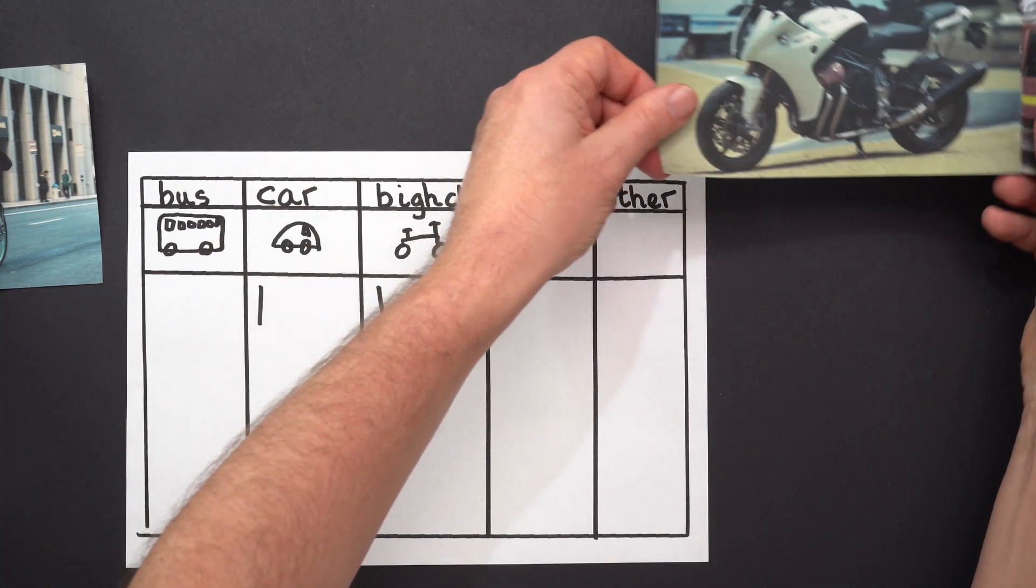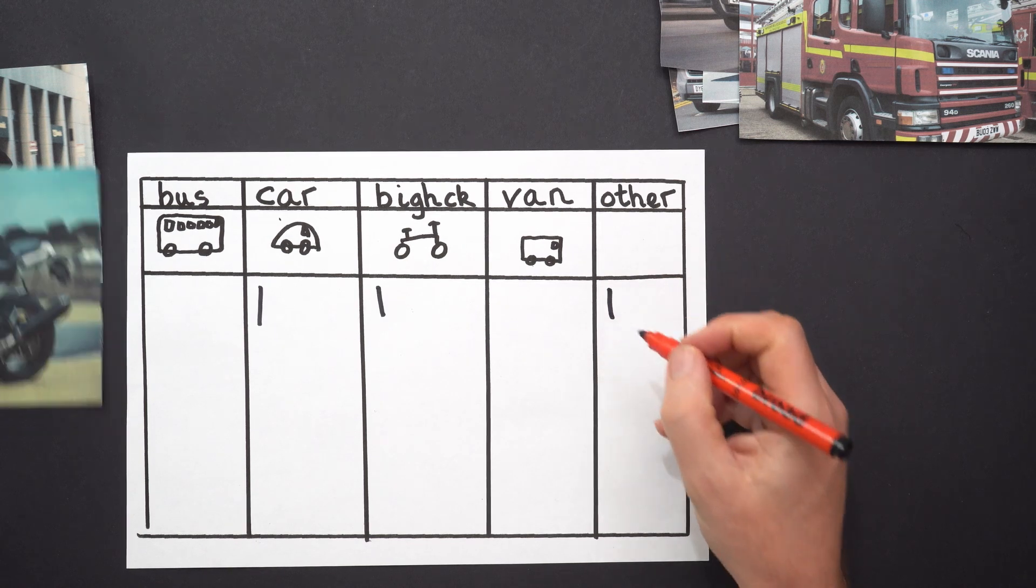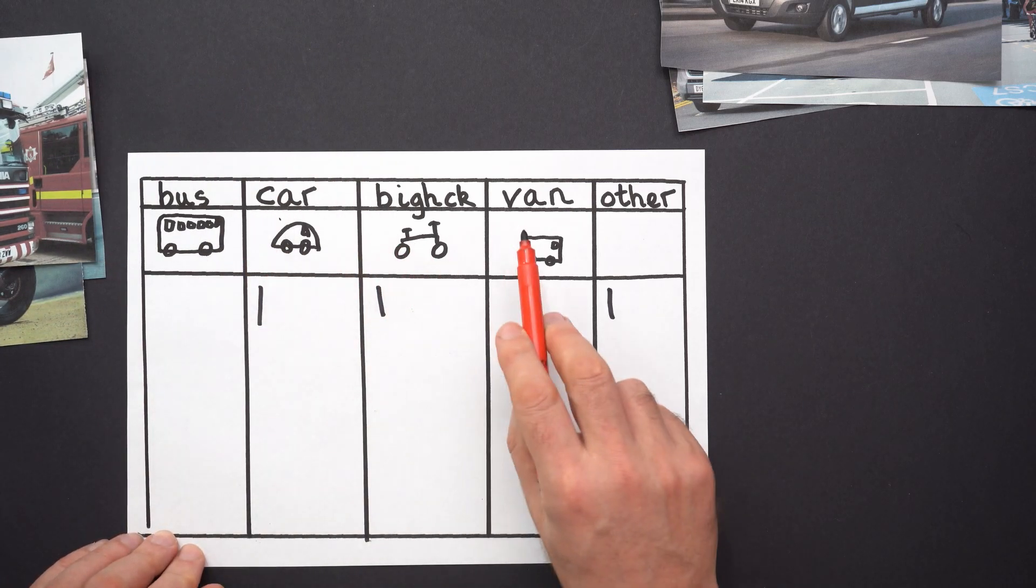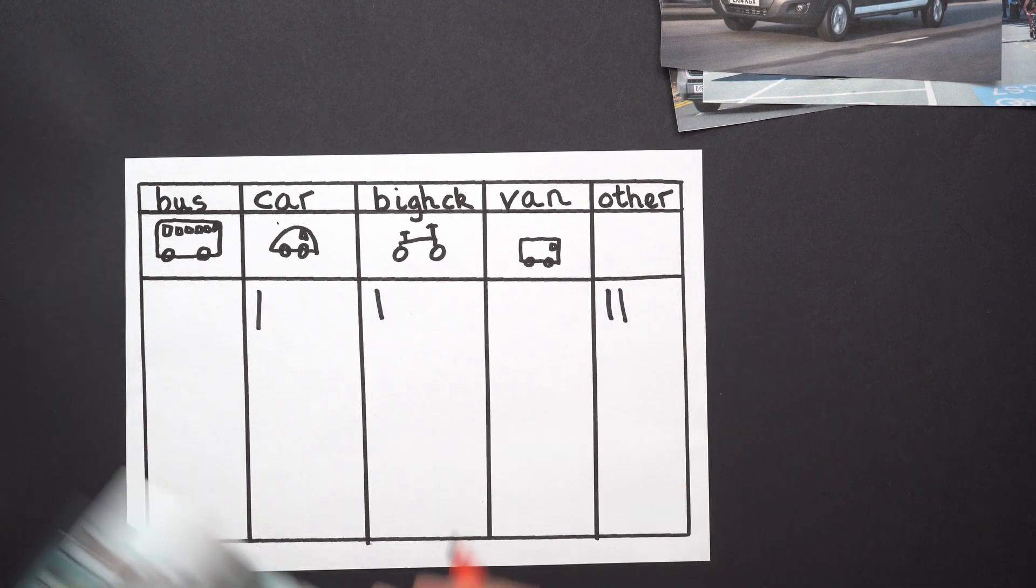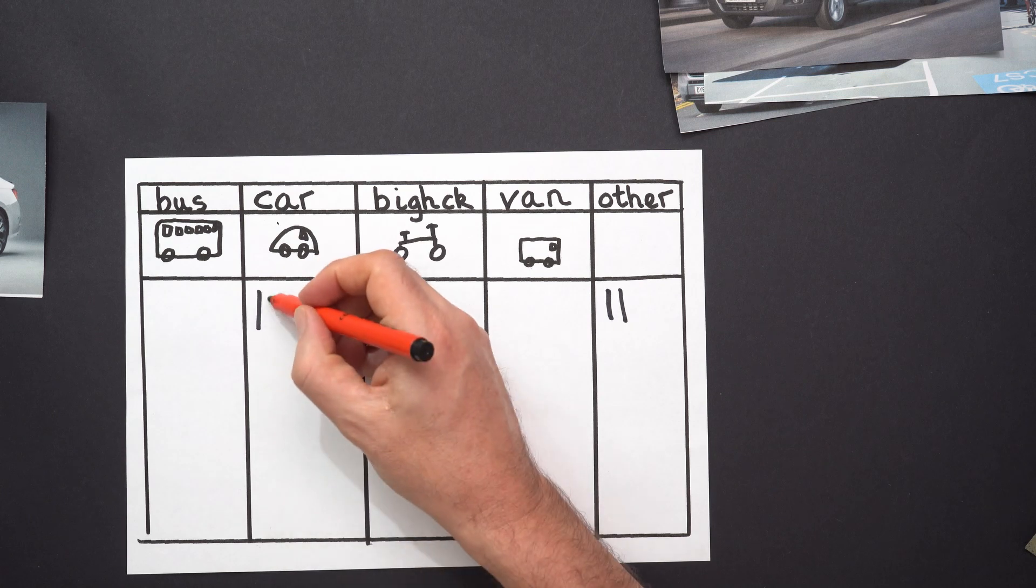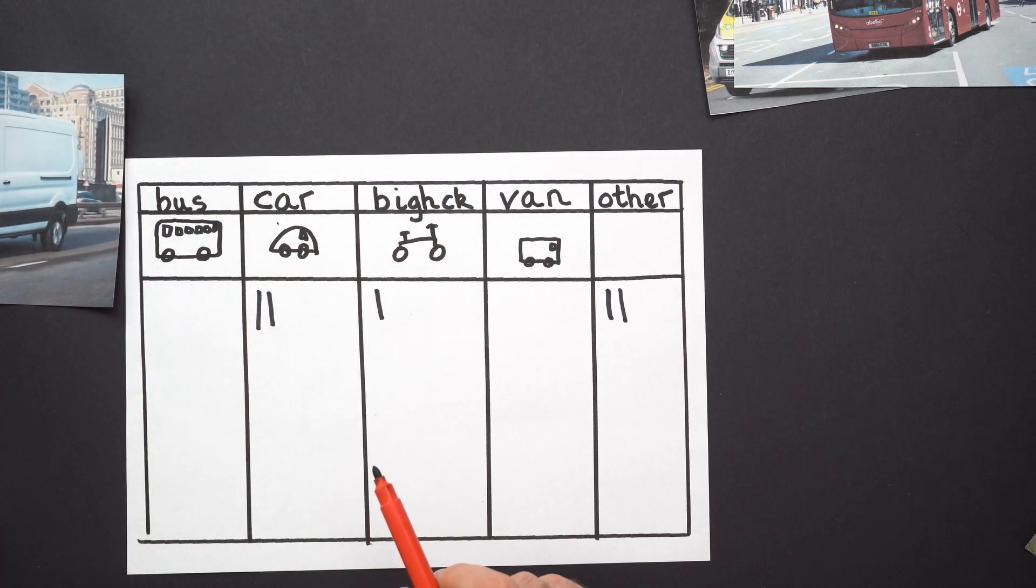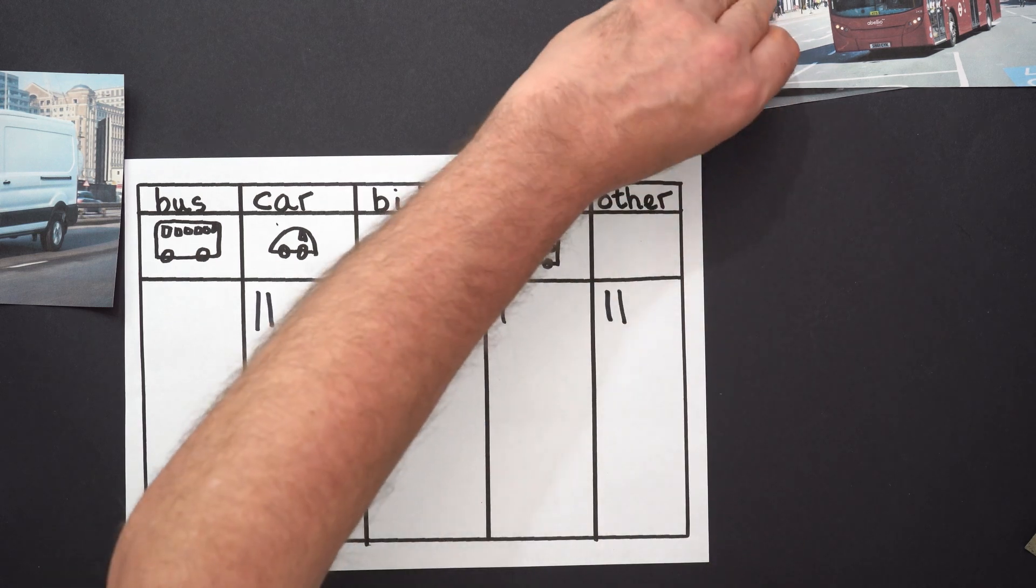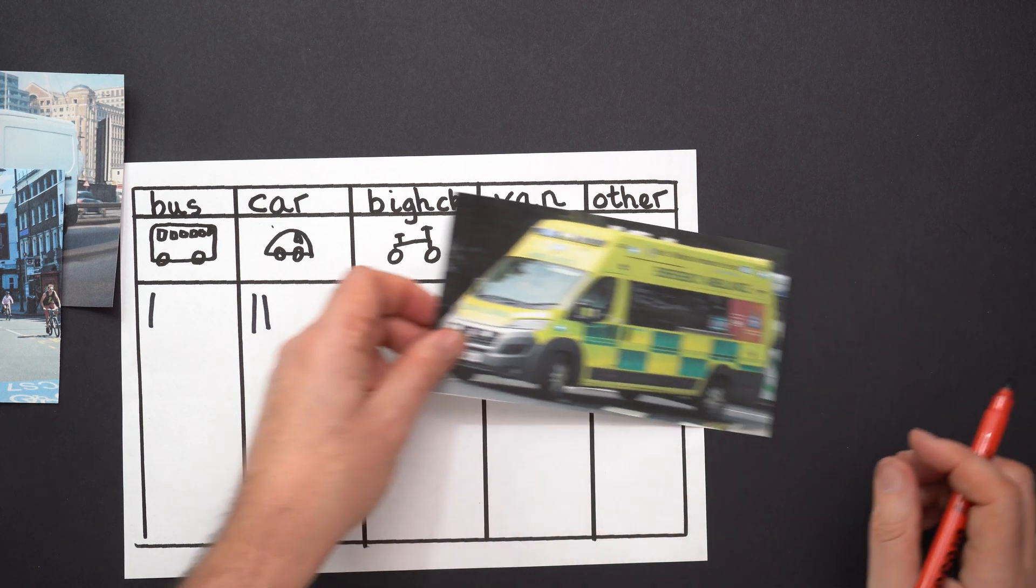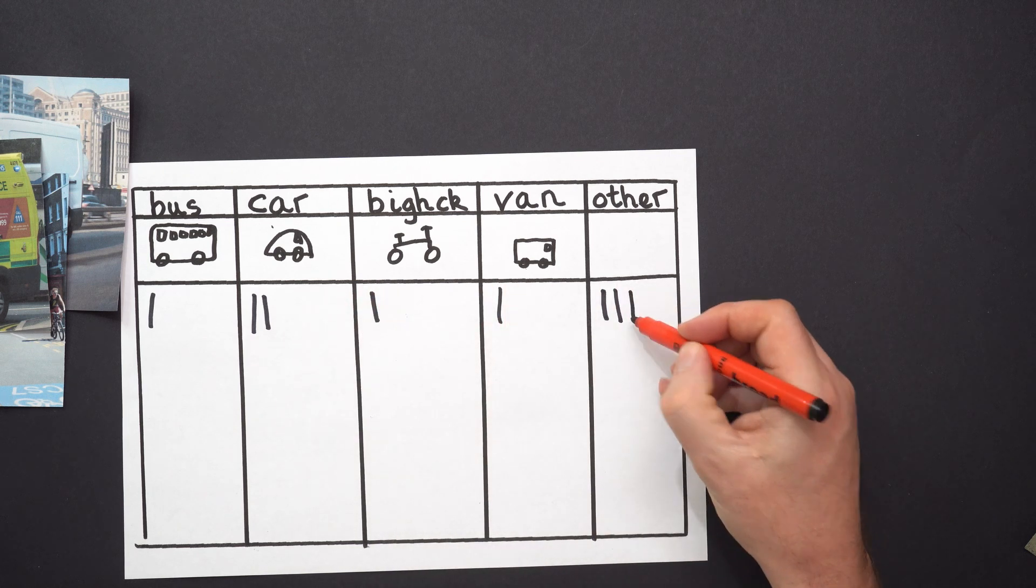Next you have a cyclist cycling by, a bike, where do you put it? Here. Then you have a motorbike coming by. Have we got motorbike? Bus, car, bike, van, other. So that would go under other. Then you have a fire engine. You see fire engine. Bus, car, bike, van, other. So we go under other. And then you have another car coming past, so where do you put a mark? Here. We've had two cars go past now. A van. Where's the van? Van starts with a V sound. Here. Bus. Ambulance.